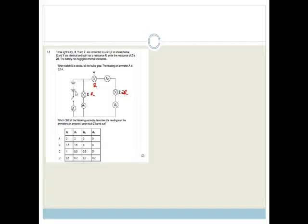The battery has negligible internal resistance which is always nice. It says when the switch S is closed, all the bulbs glow, and the reading on the ammeter is 2 amps. So the reading on ammeter A is 2 amps. It says which one of the following correctly describes the readings on the ammeters when bulb Z blows out?